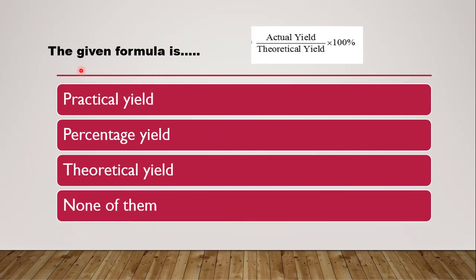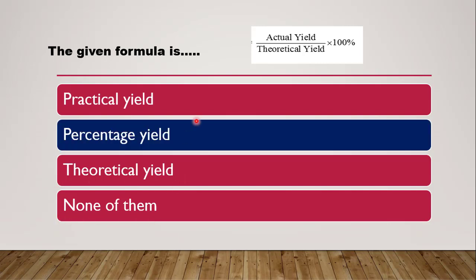Next question: the given formula in the picture — actual yield divided by theoretical yield, that is practical yield divided by theoretical yield multiplied by 100 — is of: whether it is practical yield, percentage yield, theoretical yield, or none of them. The correct answer is percentage yield. Percentage yield = (actual yield / theoretical yield) × 100.